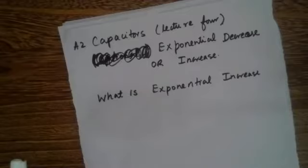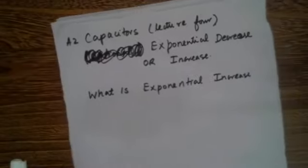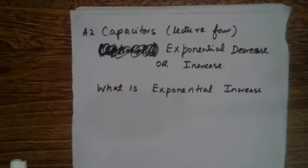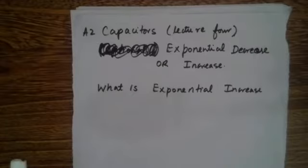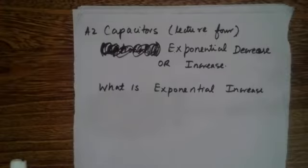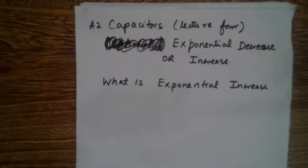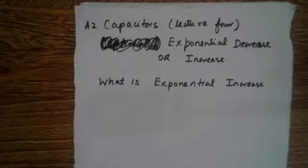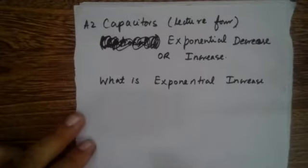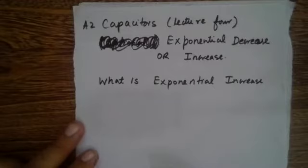We are starting lecture four on capacitors. It is related to exponential decrease or increase. This topic is optional from a Cambridge perspective — you can skip it if you are solely interested in doing the Cambridge CIE A2 capacitors course. However, if you want to understand capacitors beyond CIE needs, then you can watch this lecture. Our topic today is: what is exponential increase and what is exponential decrease?